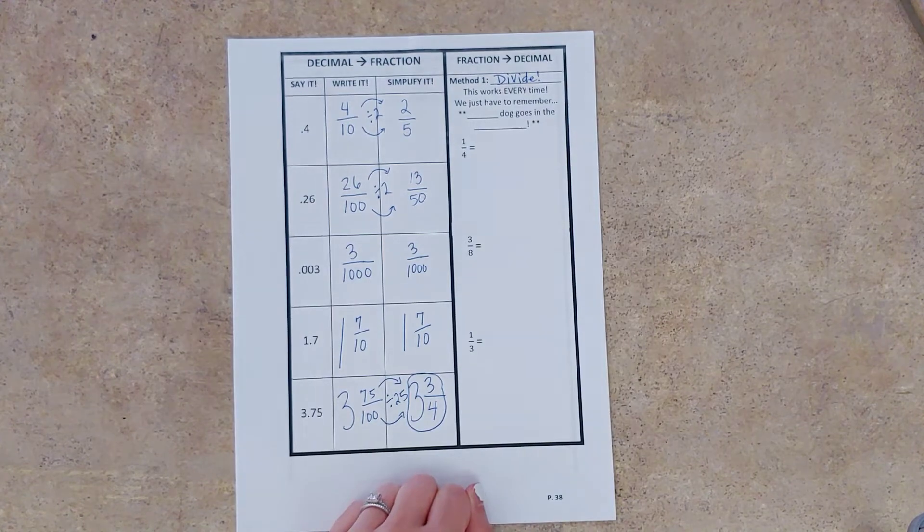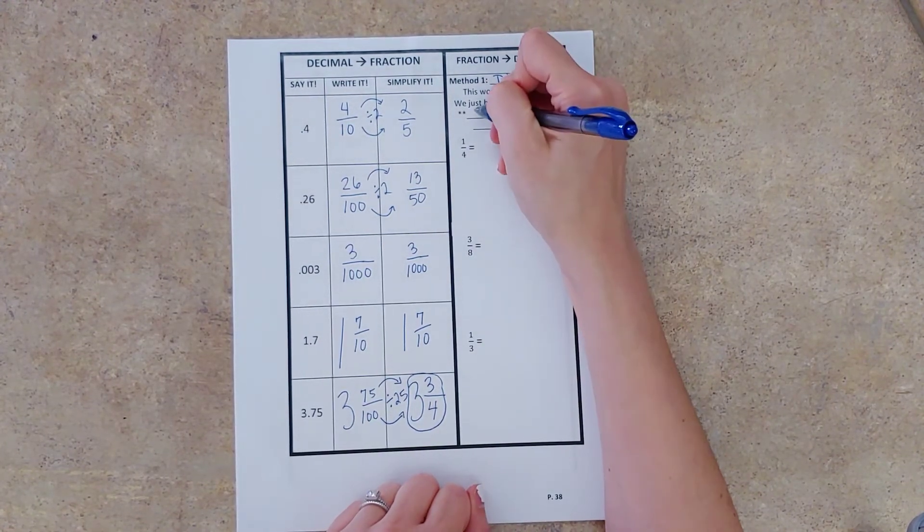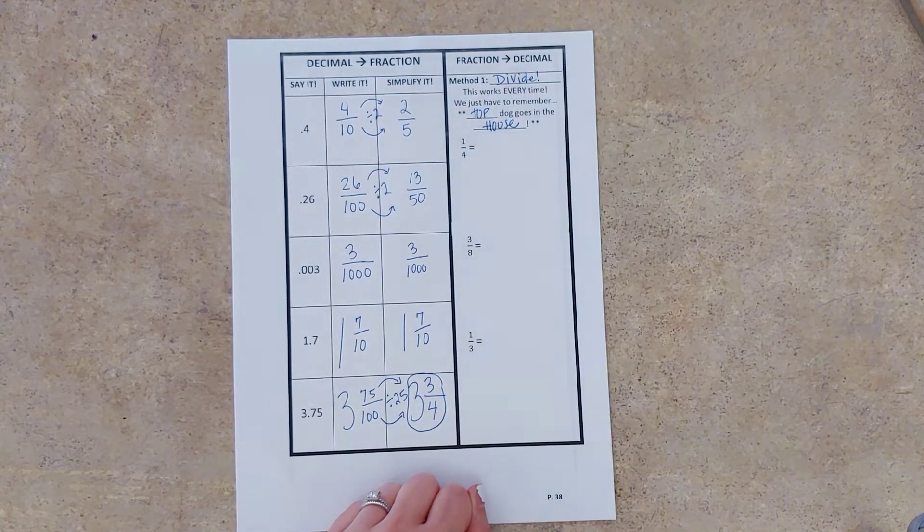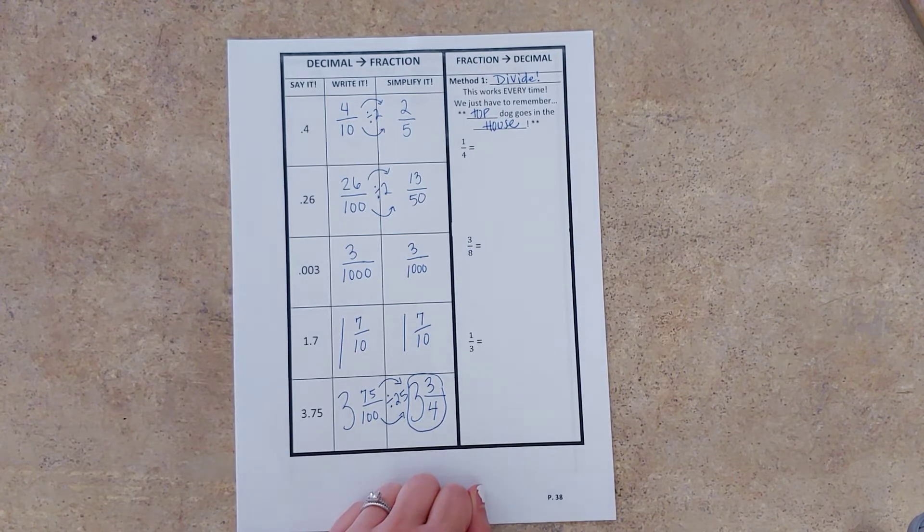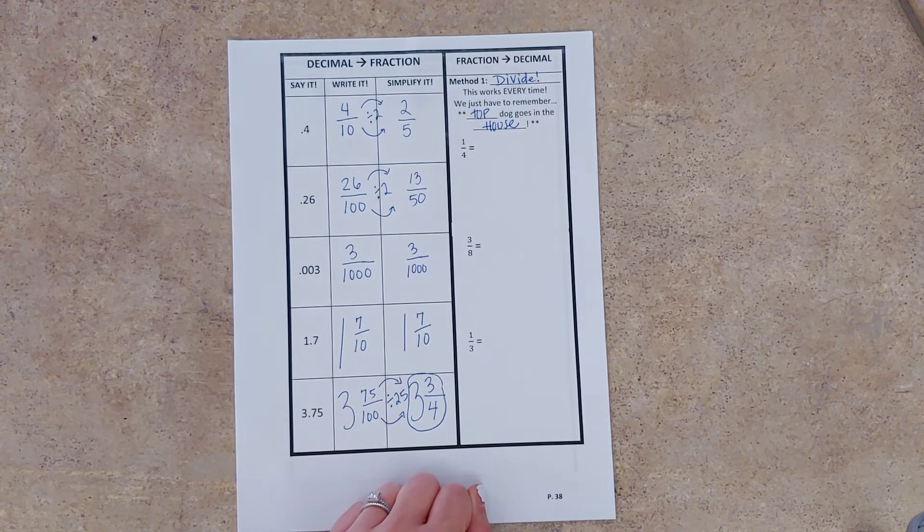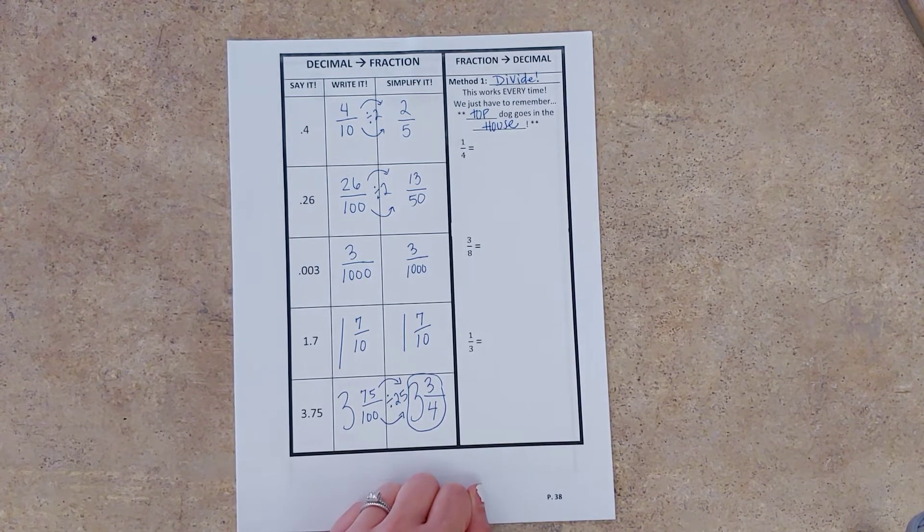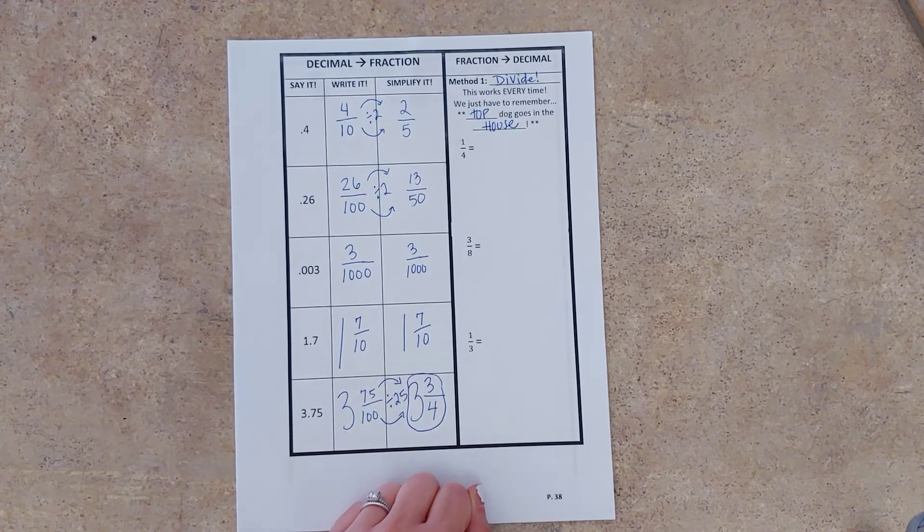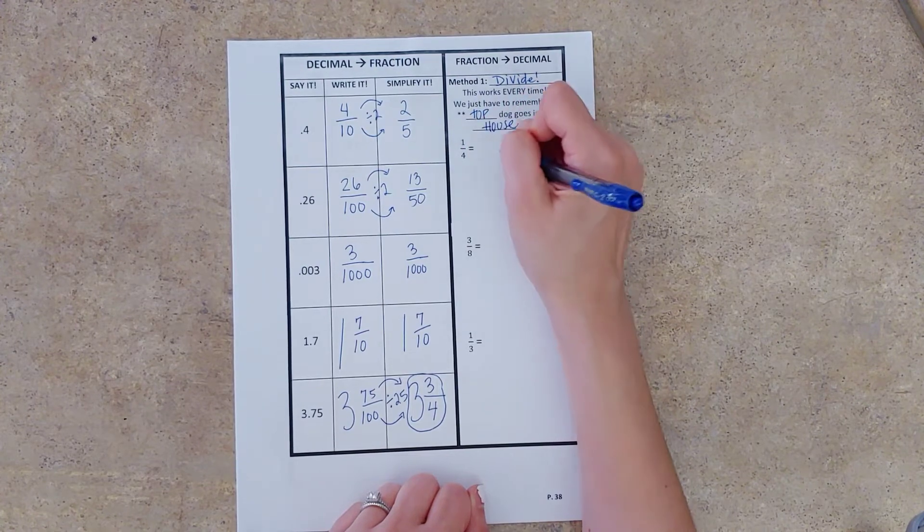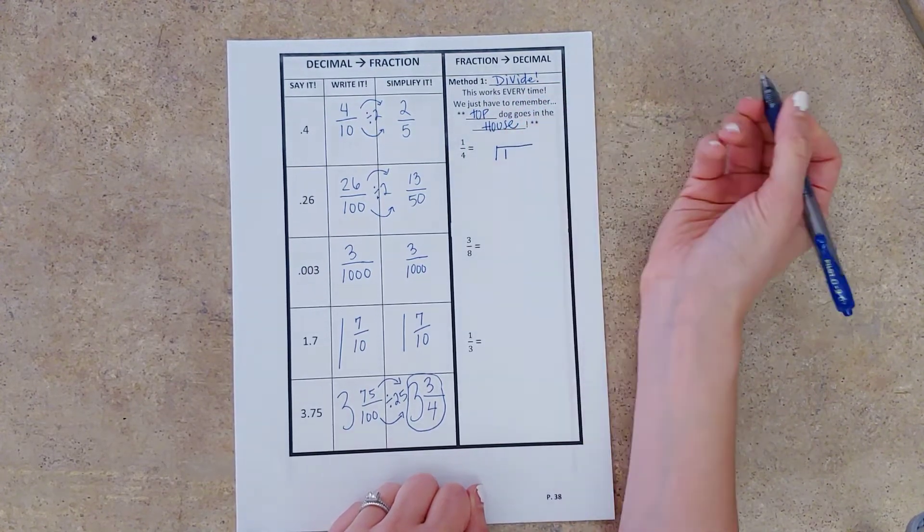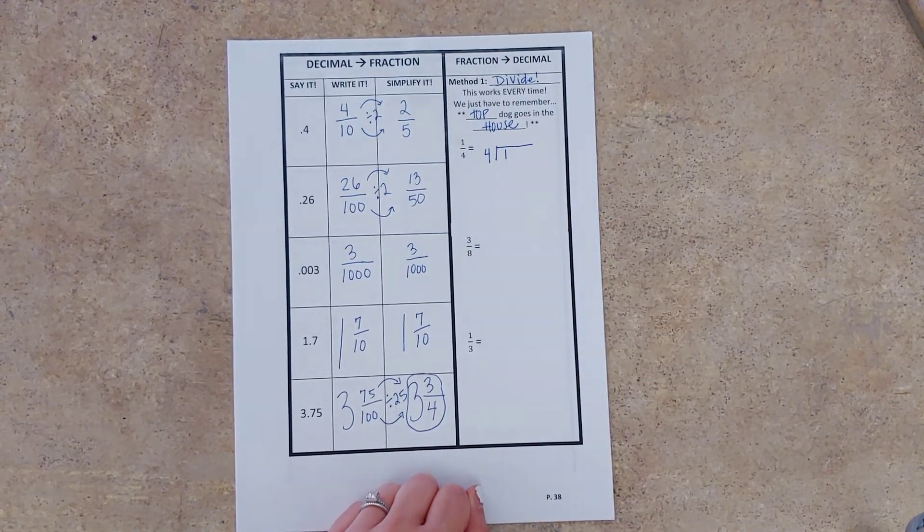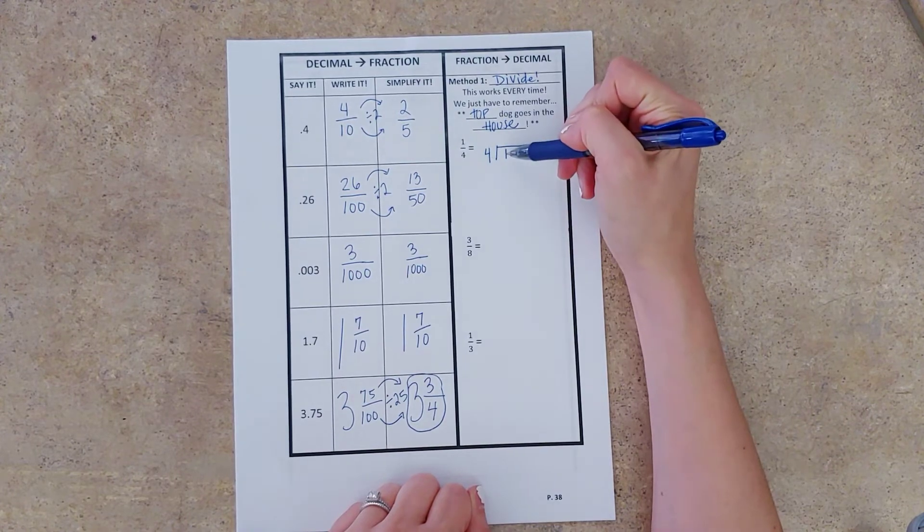All right, this works every time. We just have to remember that the top dog goes in the house. Remember, think about that chihuahua or my dogs, right? Our Pomeranian and our pit bull. The biggest one is not always the one that gets to go in the house. The biggest one is not always the boss. It's whichever one is on top. A little dog can be a boss of the household. All right, so our top dog goes in the house. Our top number goes in the house. Our denominator goes at the door. And then we're just going to divide. Nothing fancy. Four goes into zero.